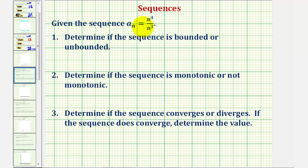We're given the sequence a_n equals n to the fourth divided by n to the third. We want to determine if the sequence is bounded or unbounded, determine if the sequence is monotonic or not monotonic, and finally determine if the sequence converges or diverges. And if the sequence does converge, we want to determine the value it converges to.